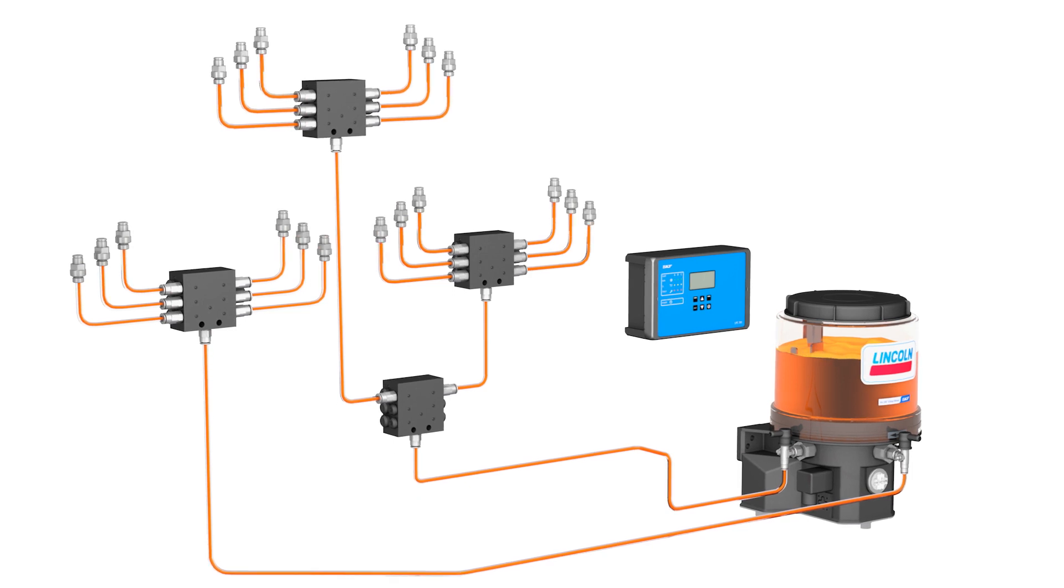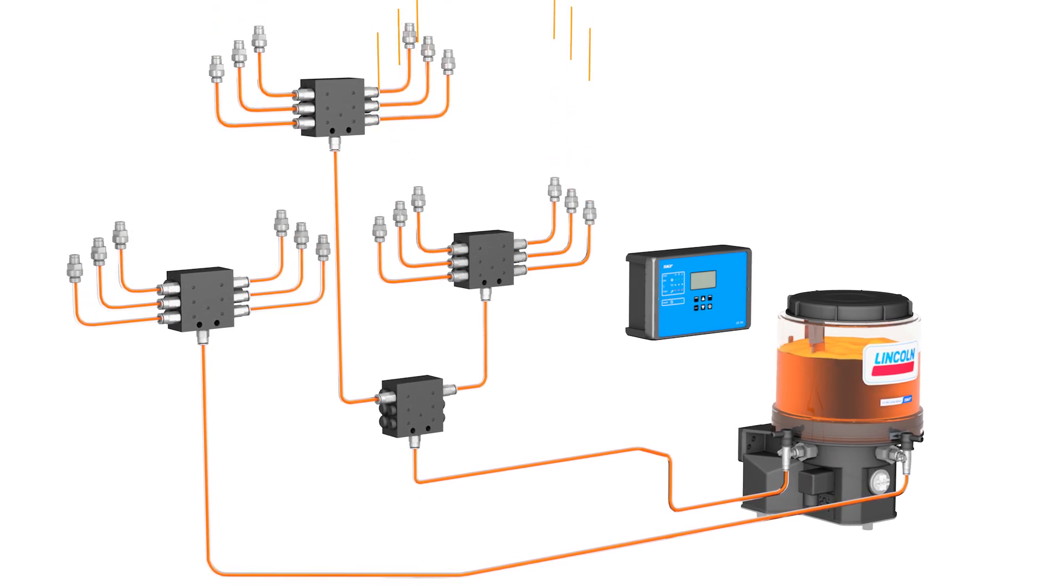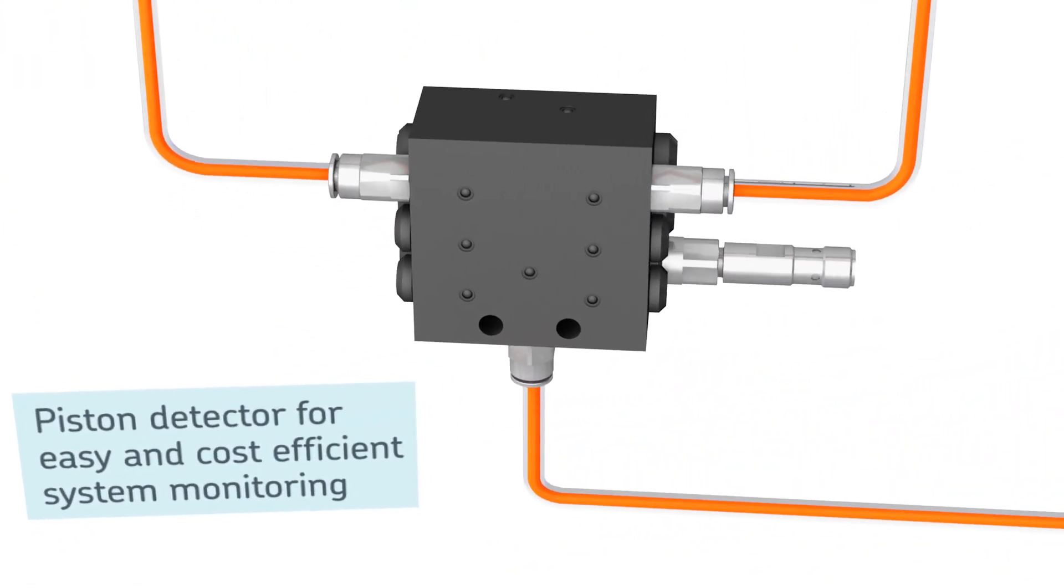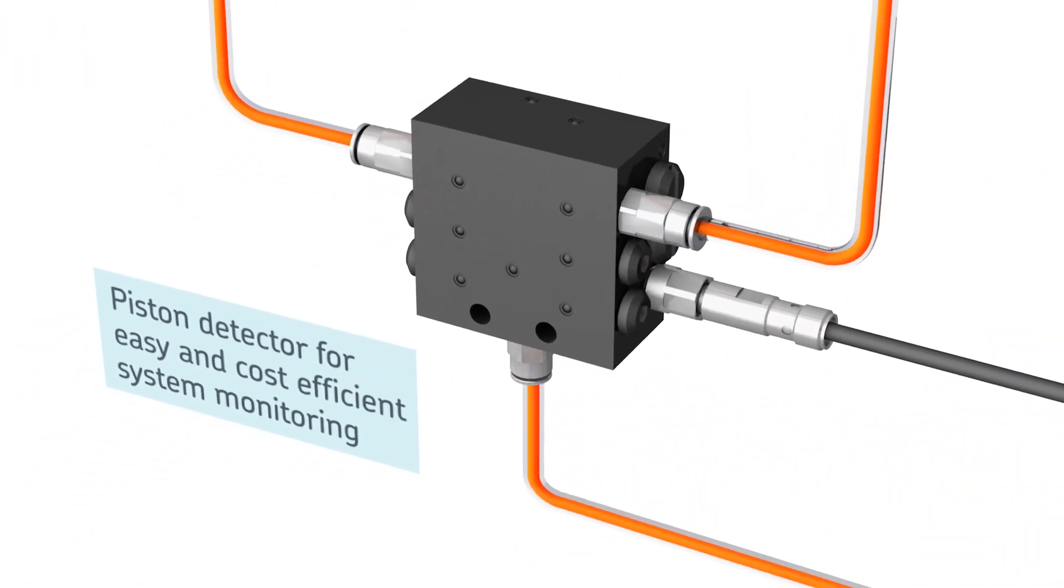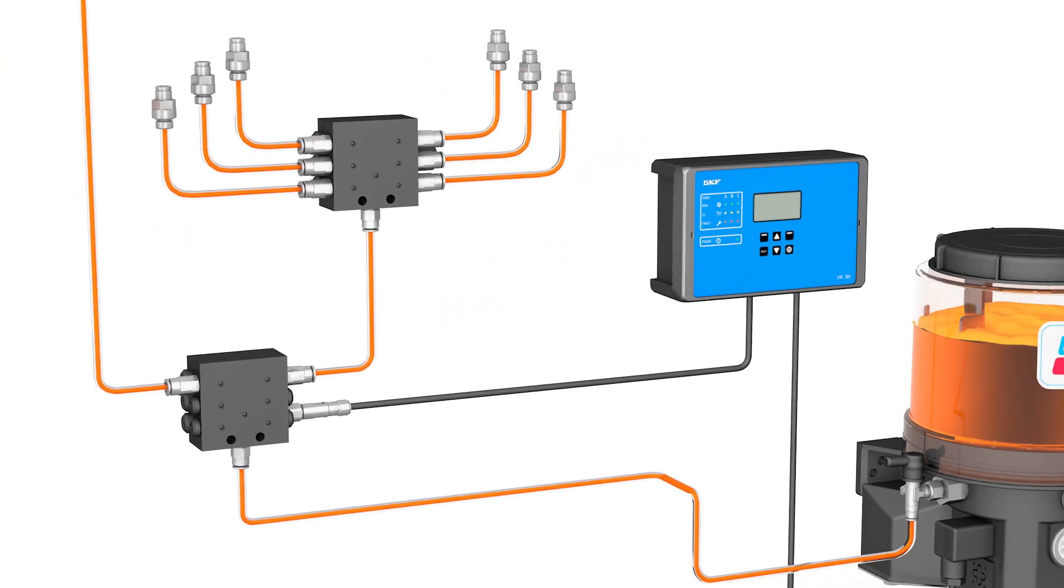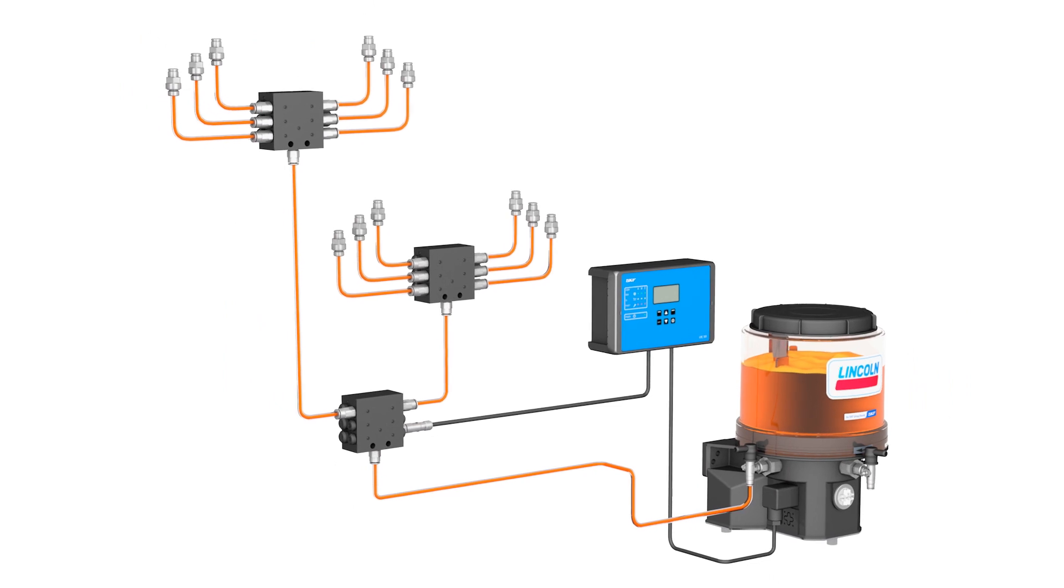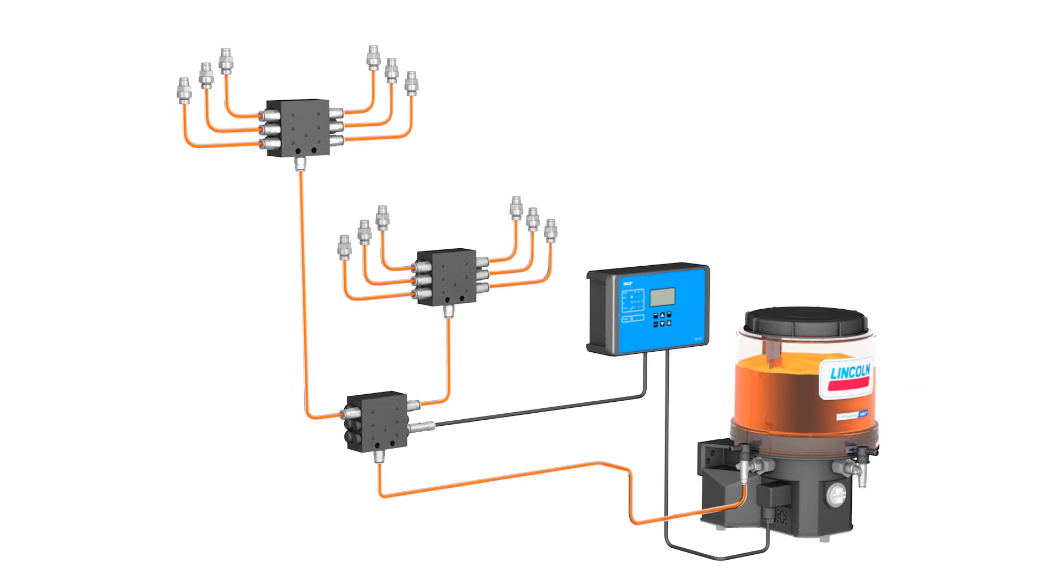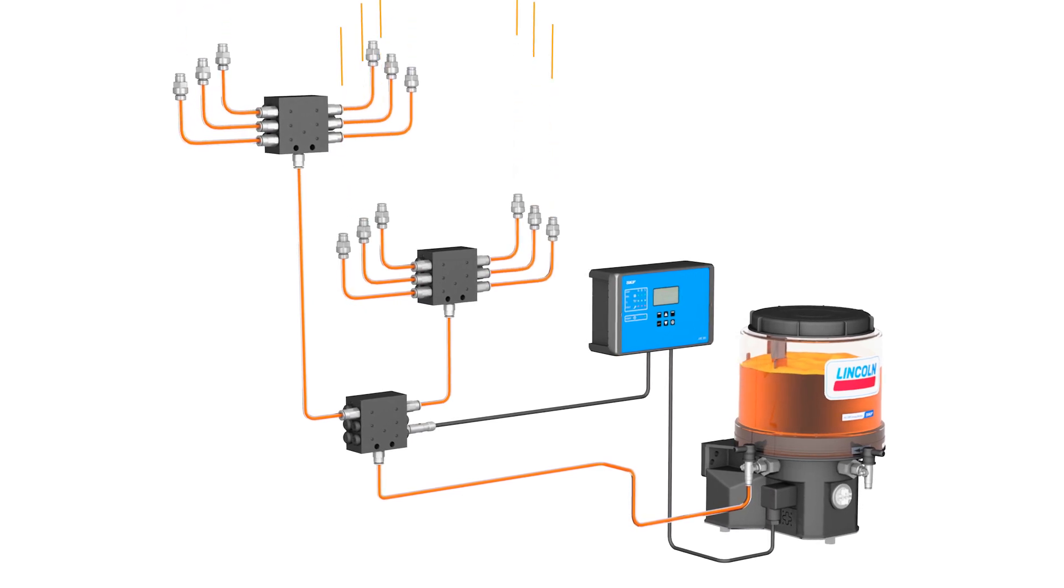The secondary metering devices also divide the lubricant and finally deliver it to the connected lubrication points. Piston detectors mounted on one outlet of a primary metering device enable cost-efficient monitoring of the entire progressive lubrication system. This is possible due to the forced metering principle of progressive metering devices. If one metering device piston moves, all the others work as well.